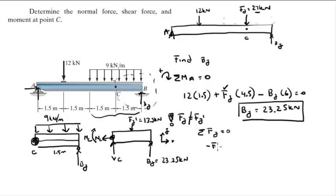Sum of forces in Y equals zero, which means minus Fy prime plus the shear plus By equals zero. When you solve for the shear, you get negative 9.75 kilonewtons.